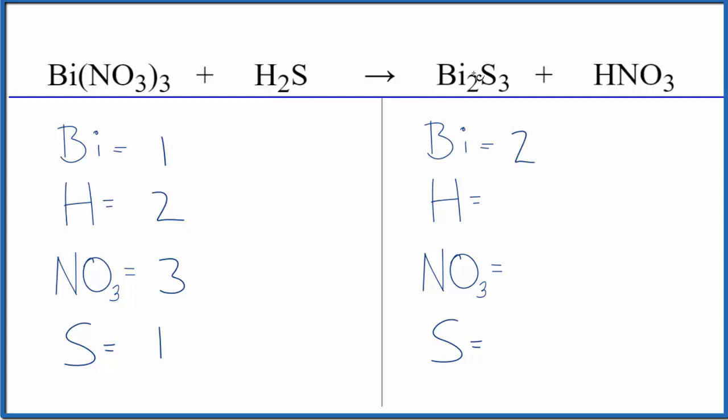Product side, two of the bismuth, hydrogen just one, only one nitrate there, and three sulfur atoms. So it's a lot neater. You get the same answer either way. This is just a lot quicker.